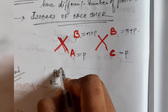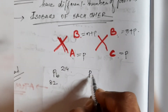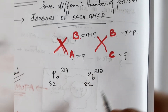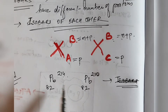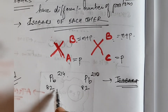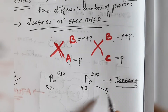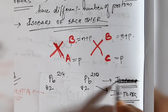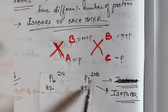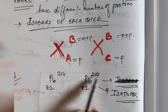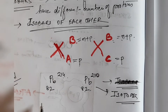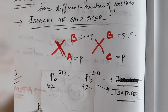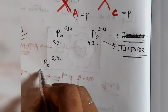Lead (Pb) with atomic number 82 and mass number 214, and lead with atomic number 82 and mass number 210 — here the atomic number is 82 in both cases but the mass numbers are different, so these are isotopes of each other. When the mass number is different but the atomic number is the same, those are isotopes.